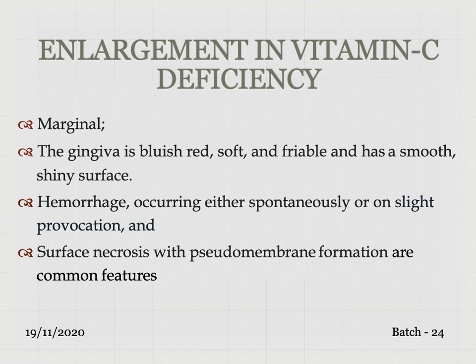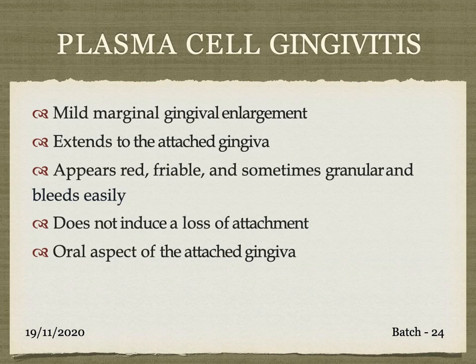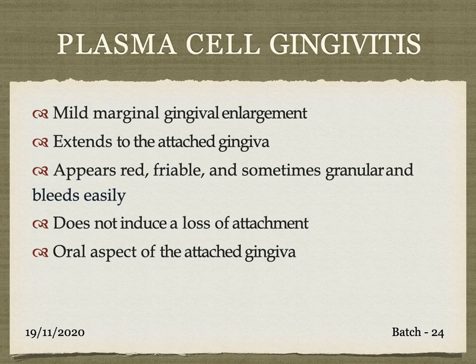Next is enlargement associated with vitamin C deficiency — again a type of inflammatory enlargement, seen in marginal gingiva. The gingiva is bluish-red, soft and friable, with a smooth shiny surface. Hemorrhage occurs either spontaneously or on slight provocation, and surface necrosis with pseudomembrane formation are common features. Next is plasma cell gingivitis — mild marginal gingival enlargement extending to the attached gingiva, appearing red, friable, sometimes granular, and bleeds easily. It does not induce loss of attachment, and the oral aspect of the attached gingiva is more involved.